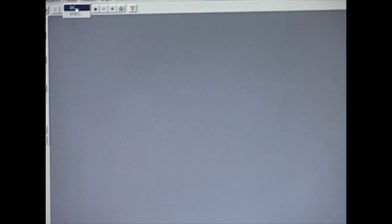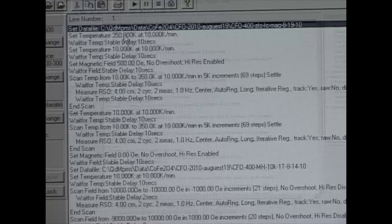Click full DC scan. The curve is centered at 2 centimeters. Different program sequences establish the conditions for the measurement.